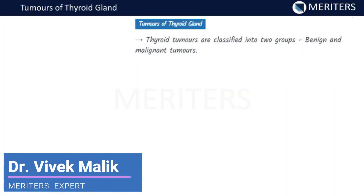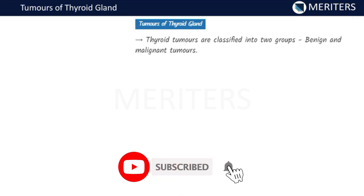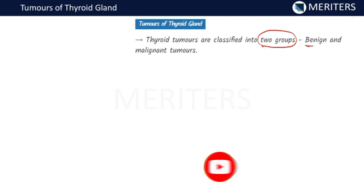Hello everyone. In this video, I will discuss the classification of the tumors of the thyroid gland. The thyroid tumors are classified into two groups: benign and malignant tumors.